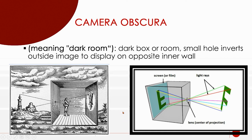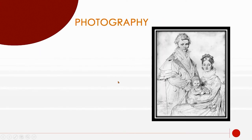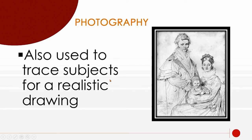Camera obscura was a very famous turn-of-the-century idea. Artists could also use it to trace subjects for realistic drawing — they would have you sit there for portraits. That was the first type of camera.